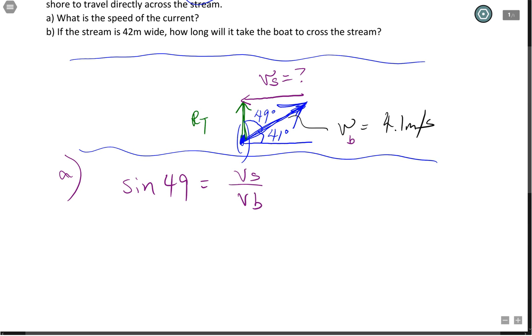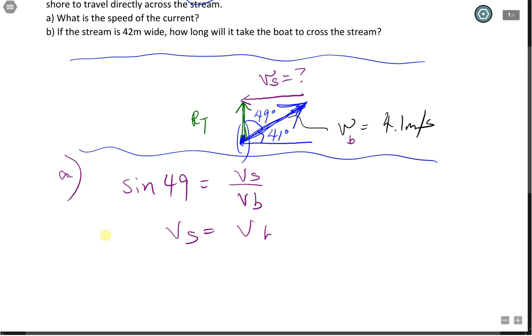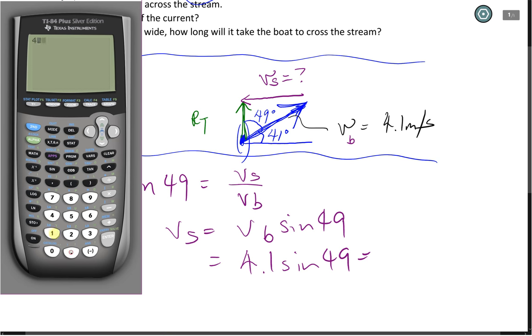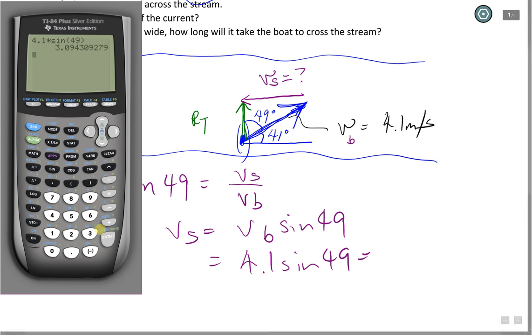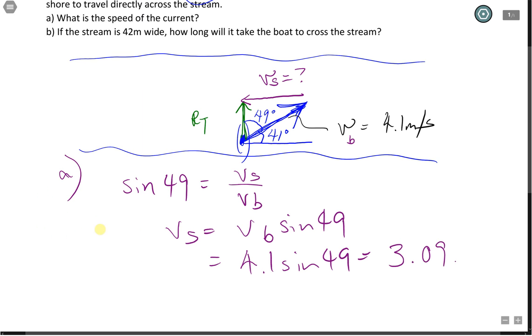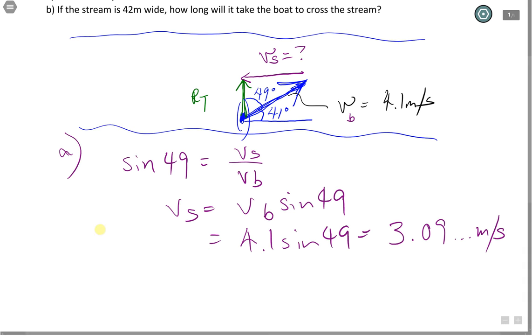I want the speed of the stream. So to get that one, I'm going to take Vb times sine 49, which is 4.1 times sine 49. This one is going to give me 4.1 times sine of 49. This is 3.09 meters per second. And since it mentions the speed of the current, it means you don't need to specify direction. I'm going to leave it as 3.1 meters per second. So that was the speed of the current.